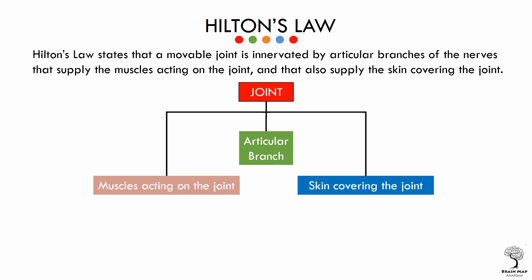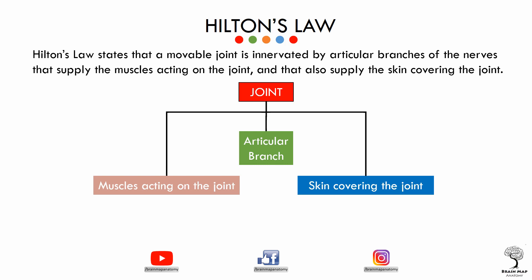In other words, a nerve that supplies a joint through an articular branch will have a muscular branch supplying the muscle acting on the joint, and also a cutaneous branch that supplies the skin around the joint. Now we will see an example for Hilton's Law.